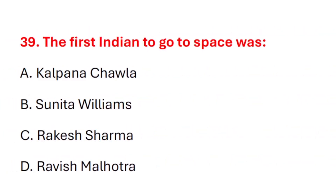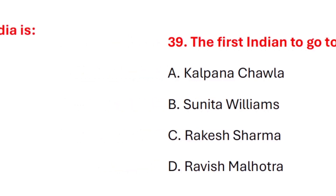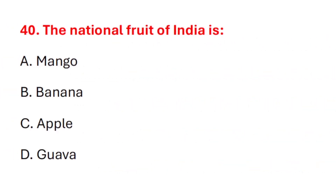Question 39. The first Indian to go to space was? Correct answer is option C: Rakesh Sharma. Question 40. The national fruit of India is? Correct answer is option A: Mango.